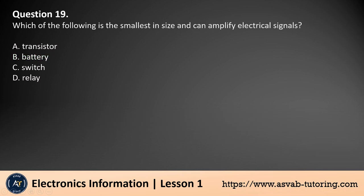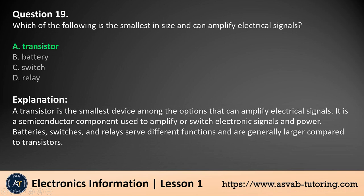Question 19. Which of the following is the smallest in size and can amplify electrical signals? a. Transistor, b. Battery, c. Switch, d. Relay. The answer is a. A transistor is the smallest device among the options that can amplify electrical signals. It is a semiconductor component used to amplify or switch electronic signals and power. Batteries, switches, and relays serve different functions and are generally larger compared to transistors.